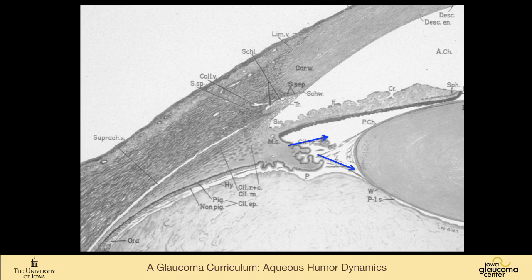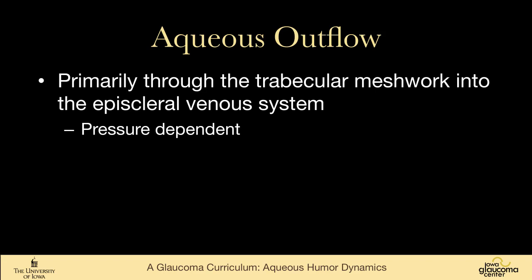The fluid flows from the ciliary body, bathes all the structures in the posterior chamber, goes through the pupil into the anterior chamber, bathes the cornea, and ultimately reaches the iridocorneal angle. There it exits by two routes — primarily through the trabecular meshwork into the episcleral venous system, which is pressure-dependent.